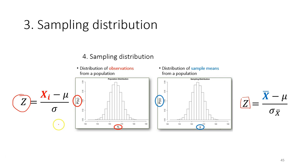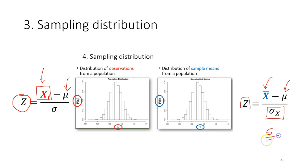The formula is slightly different. For the observation distribution you have the observation value and the population mean. For the sampling distribution you have the population mean and the sample mean, because you are asking a question about the sample, and you have the standard error — meaning you calculate the standard deviation and divide by the square root of the sample size.